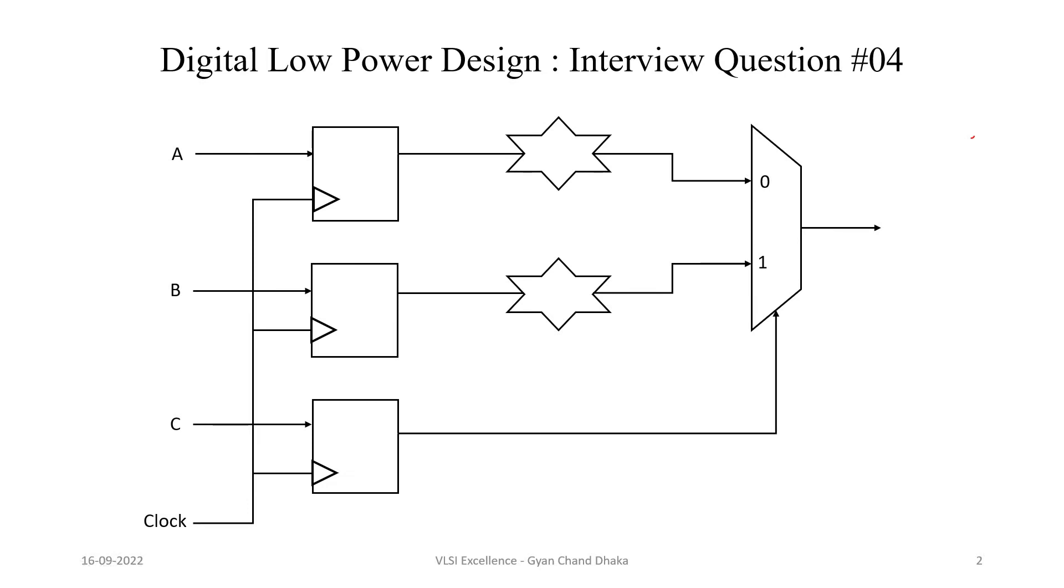So friends, here we have a given circuit and we have to optimize this circuit for lower power consumption. If we carefully analyze this circuit, we have three flip-flops here. Let's call them flip-flop 1, flip-flop 2, and flip-flop 3. And if you see here, the output of flip-flop 3 is basically used as a selection line for this particular MUX, and the two inputs of this MUX are nothing but the outputs from flip-flop 1 and flip-flop 2.